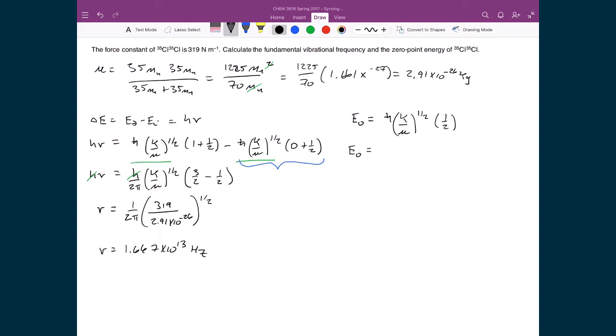E naught equals—h-bar is 1.055 times 10 to the minus 34, k is 319, divided by mu which is 2.91 times 10 to the minus 26, all to the power of 1/2. I can write my 2 out front. When I plug these numbers into my calculator, I get E naught equals 5.52 times 10 to the minus 21 joules.